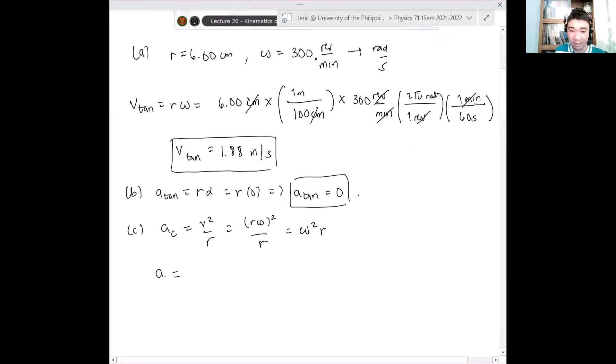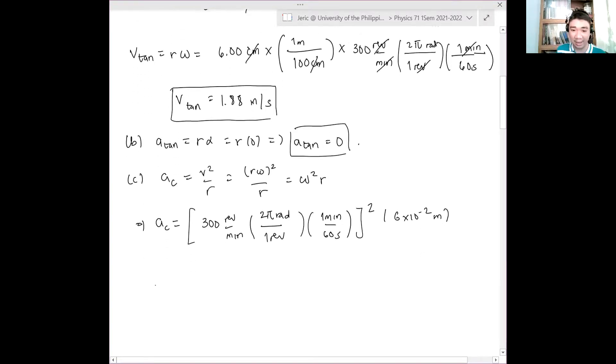So this is simply, so a_c is just equal to - our omega again here is 300 revolutions per minute. So you have 300 revolutions per minute multiplied by two pi radians over one revolution, multiplied by one minute over 60 seconds, all squared, multiplied by 6.00 times 10 to the minus 2 meters. And when you plug it in there, the centripetal acceleration is simply 59.2 meters per second squared. Please verify.